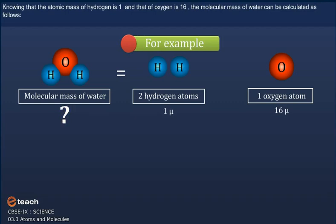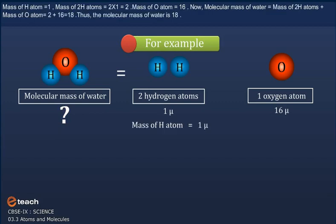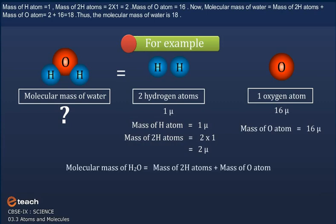Knowing that the atomic mass of hydrogen is 1u and that of oxygen is 16u, the molecular mass of water can be calculated as follows. Mass of one hydrogen atom is 1u; mass of two hydrogen atoms is 2×1 = 2u. Mass of oxygen atom is 16u. So molecular mass of H2O = 2 + 16 = 18u. Thus, the molecular mass of water H2O is 18u.